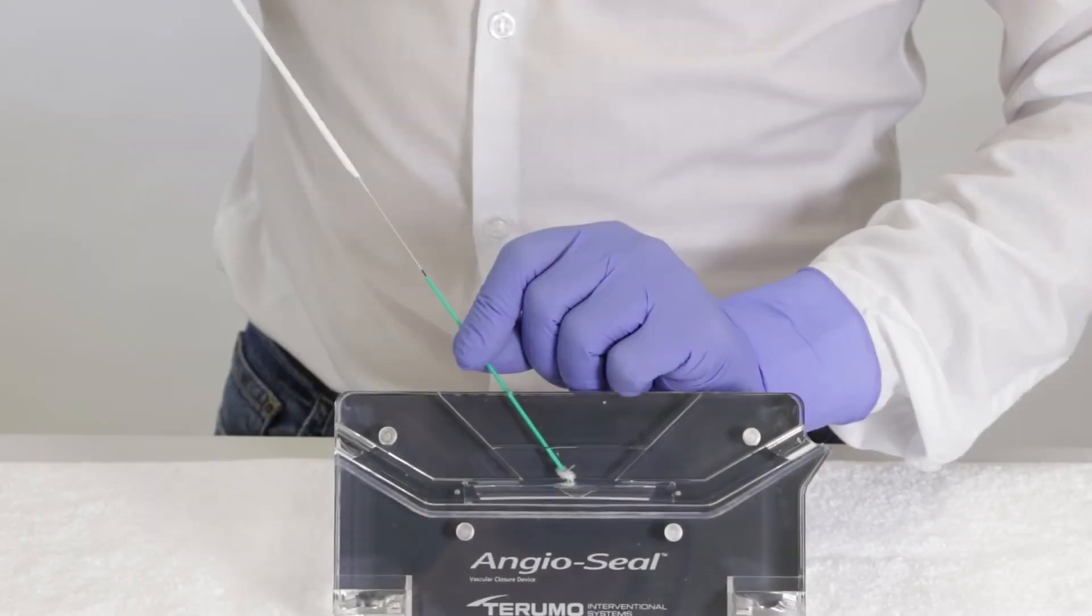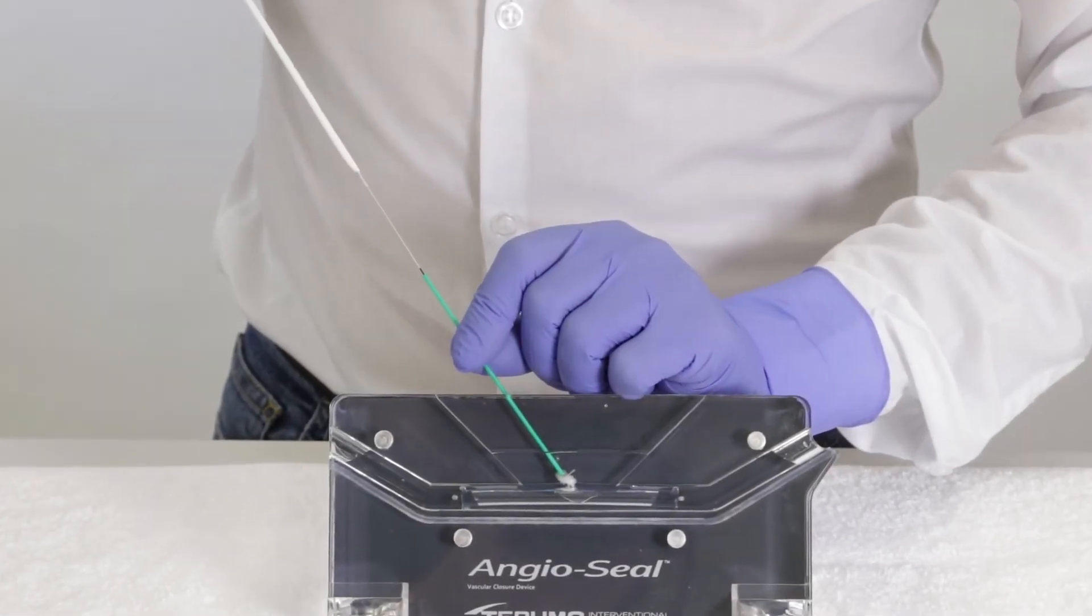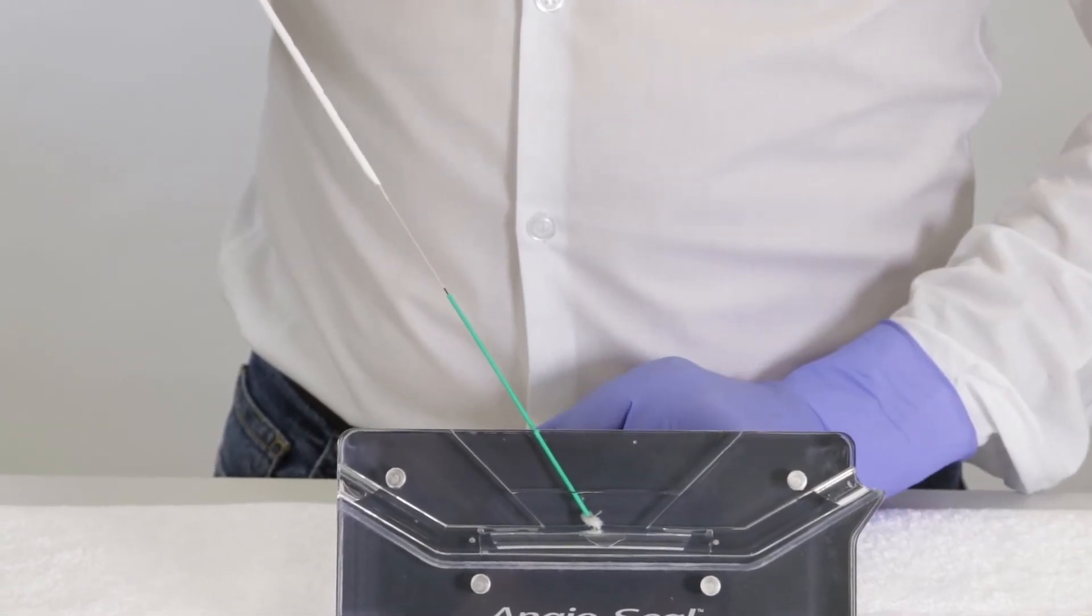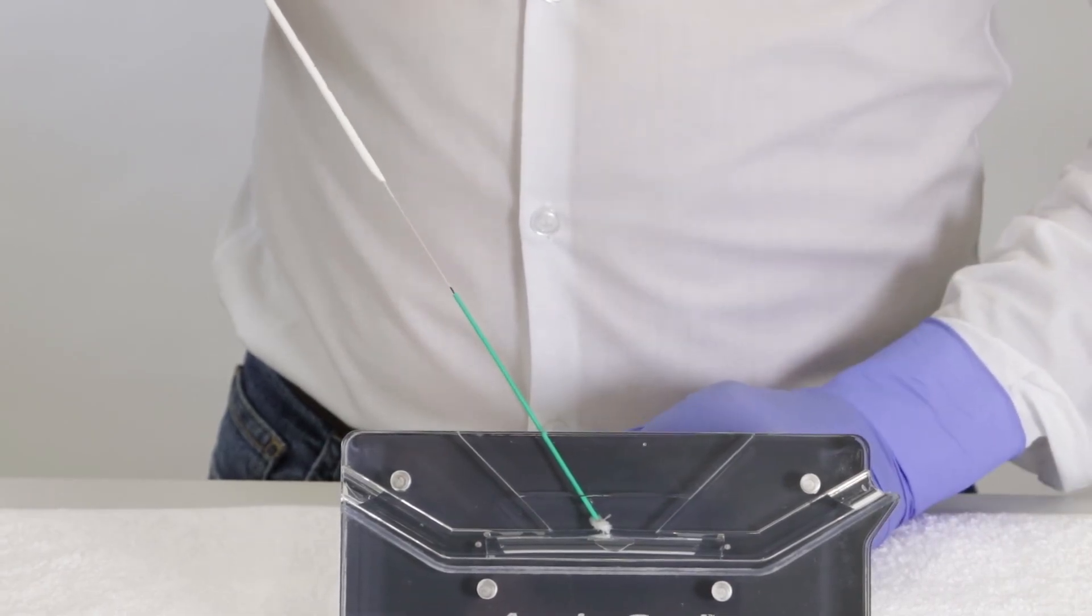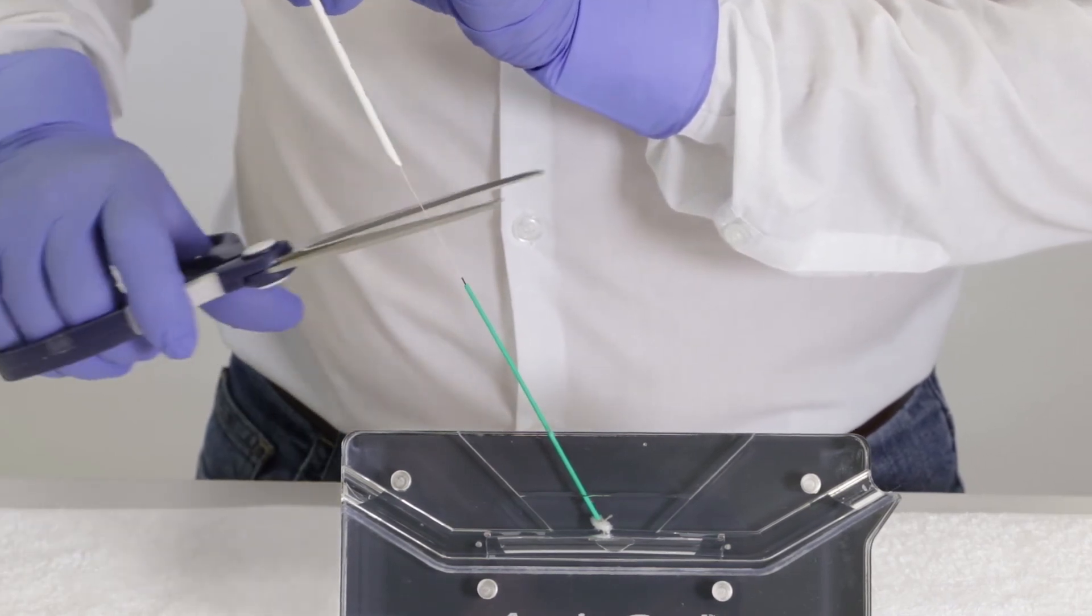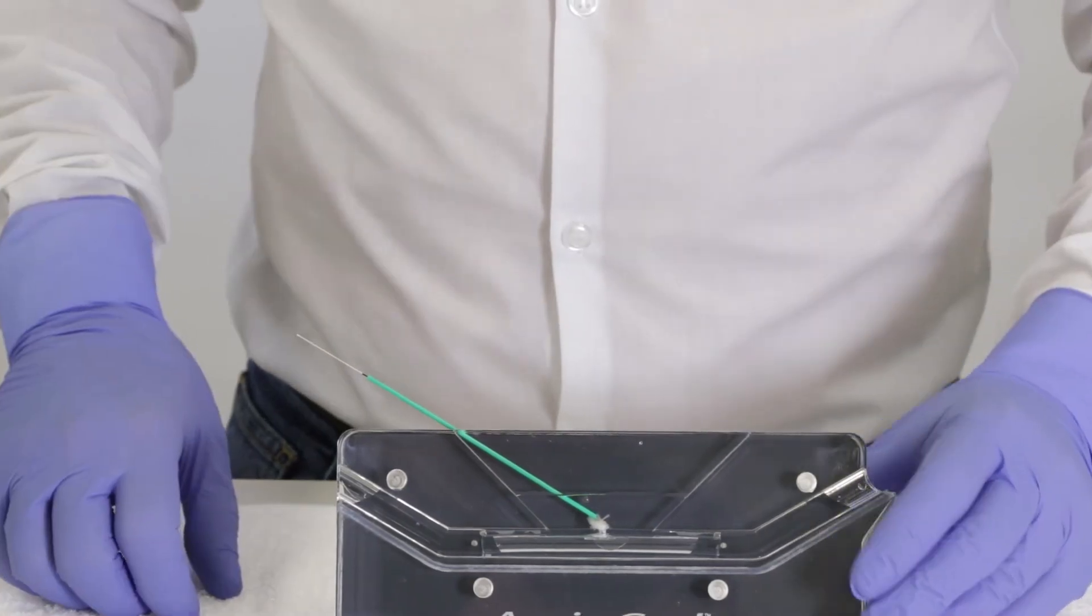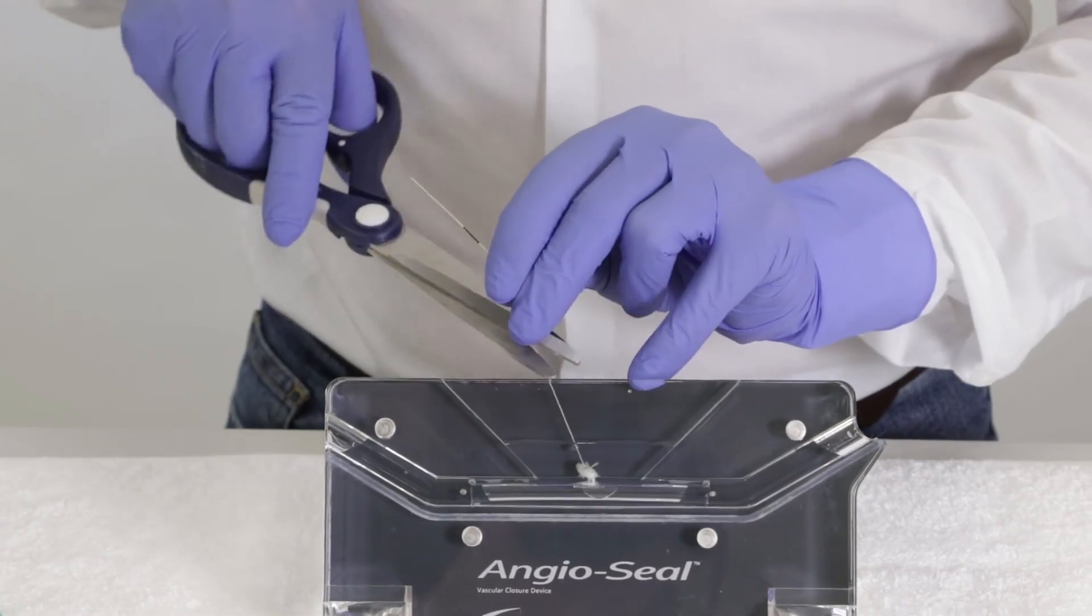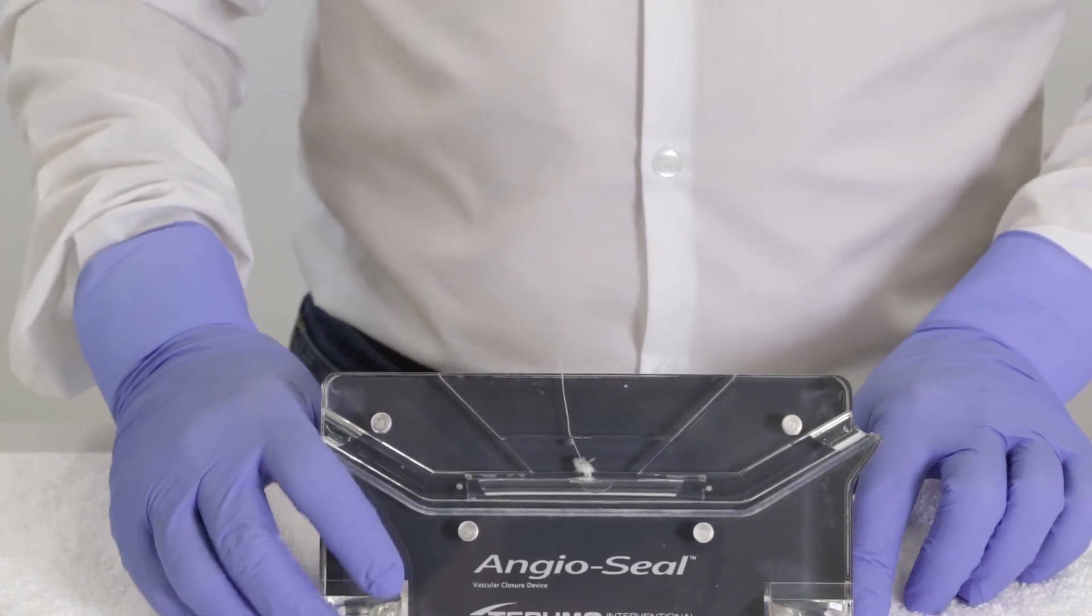Before cutting the suture, make sure there's no hematoma forming, no bleeding, because at this point you can still compress a little with the tamper tube. The first cut should be made between the black and clear markers. When all is okay, remove the tamper tube holding the suture, push down on the skin, and cut.